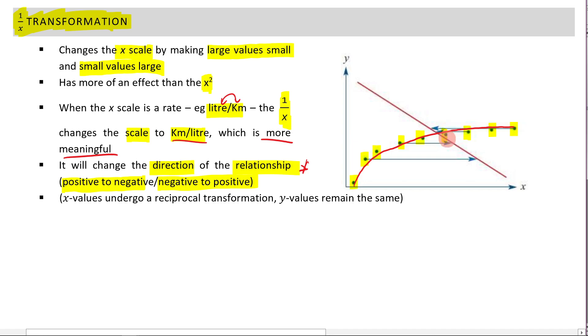Once I've applied my reciprocal transformation, however, see how now it's going down? I went from a positive gradient in the red, then after I applied my reciprocal transformation, I now get a negative gradient. That's important.